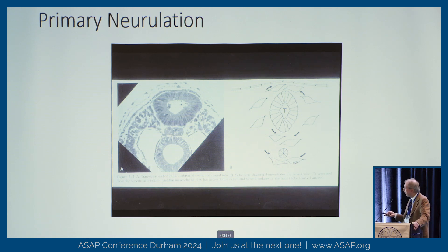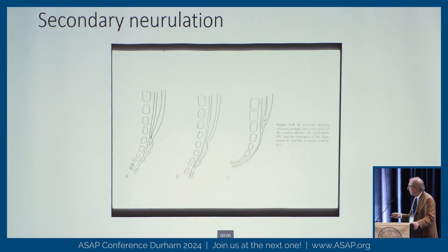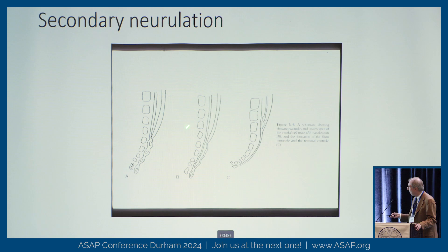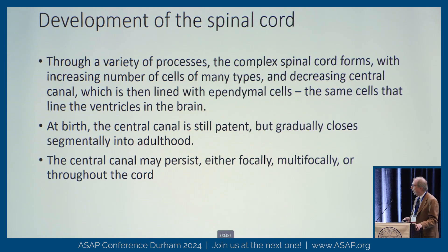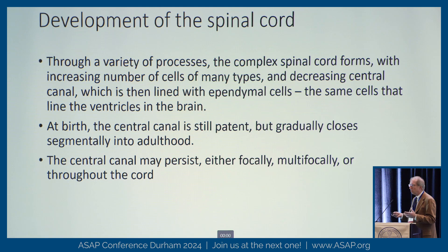This is called primary neurulation — it forms most of the nervous system down to the tip of the conus, as well as the cauda equina, which has a slightly different process — basically a series of coalescing bubbles that join with the primary neurulation to form one long neural tube with a cavity in the middle. Through a variety of complex processes, the spinal cord forms with increasing cell types and decreasing central canal size, so that fluid space gradually gets smaller and smaller while the tissue gets more complex and bigger.